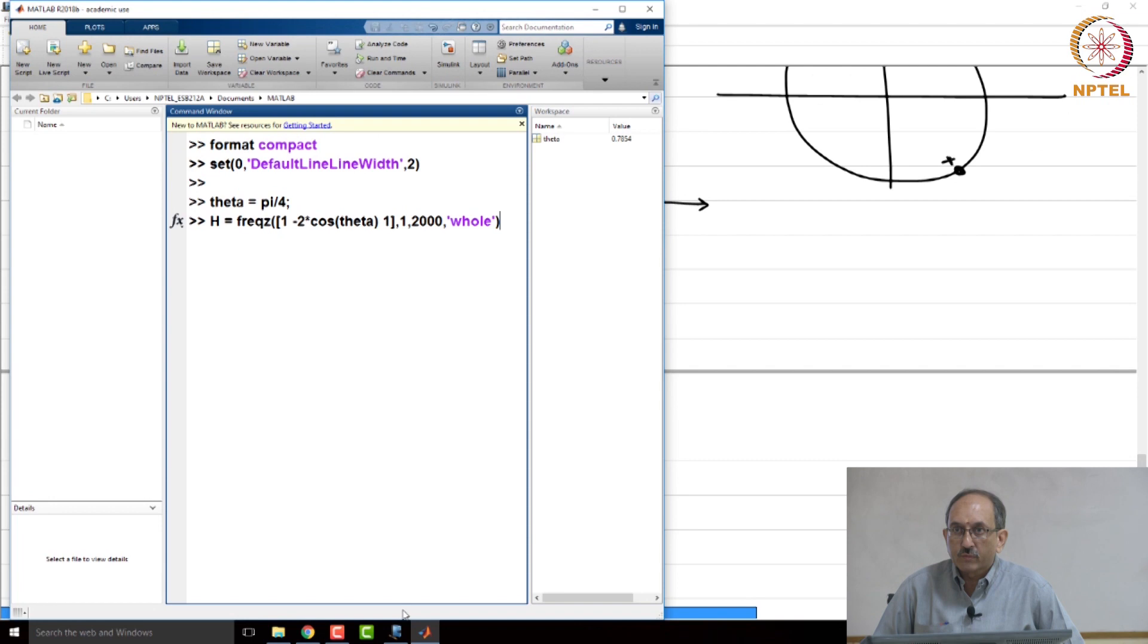and then denominator is 1 and then you want to evaluate this at 2000 points and let us evaluate this for the whole frequency range between minus pi to pi. So, this is the frequency response of a simple notch filter. And now, let us plot this. So, this is command called FFT shift. What this does is, there are, right now we have evaluated the response between 0 to 2 pi. What this will do is, it will help you to plot the same response between minus pi and pi. So, that is all this command does.